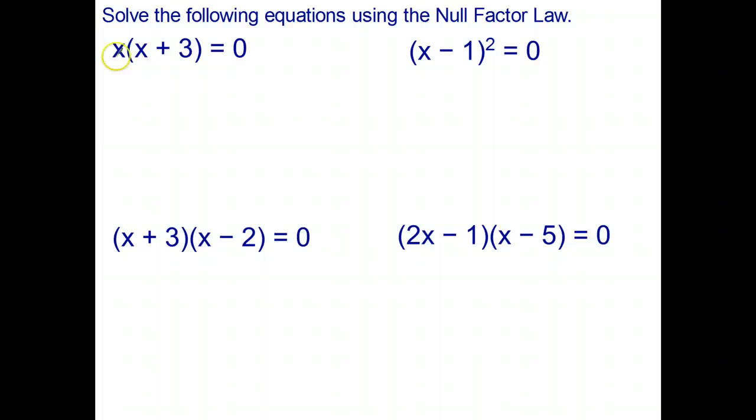So what we have here is two expressions multiplied together to give us zero. So let's call that first one a and that second expression b. So a and b don't have to be numbers or just variables, they can actually be entire expressions. So here we have a times b equals zero. So because of that, we can say well either a is zero, in other words x is zero, or b is zero. In other words, x plus three is zero.